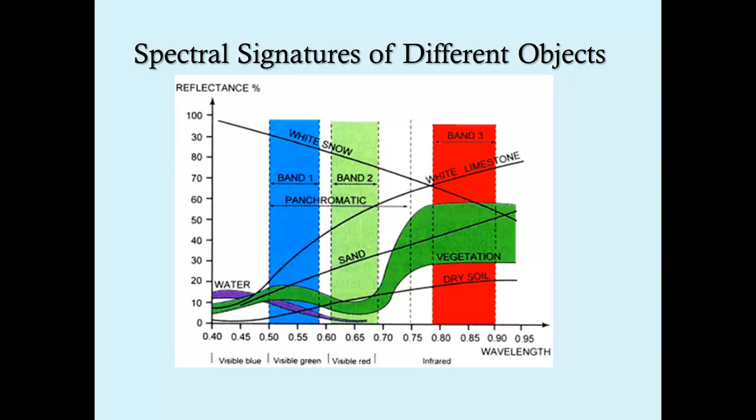So the bands here are represented by the three rectangular polygons that are shown behind the curves of objects.